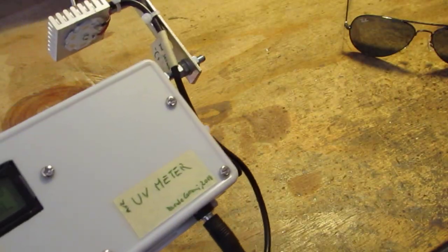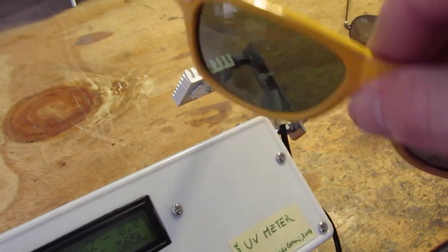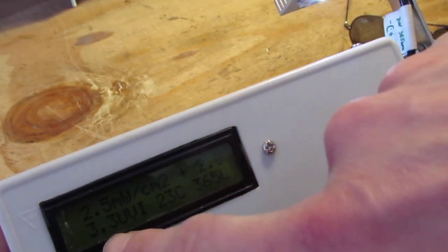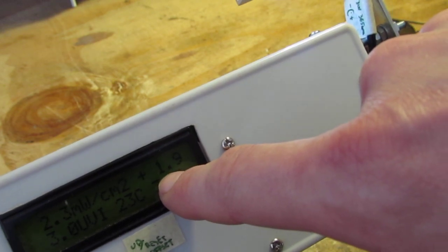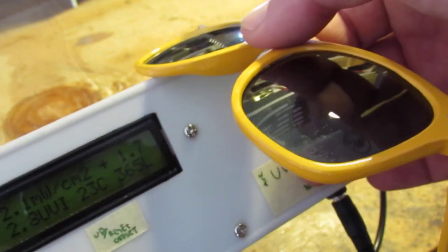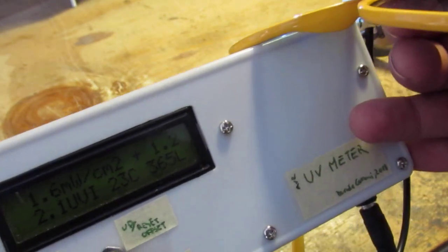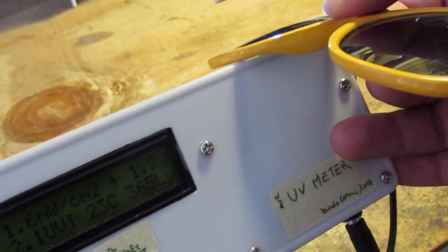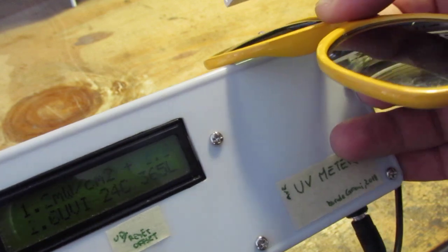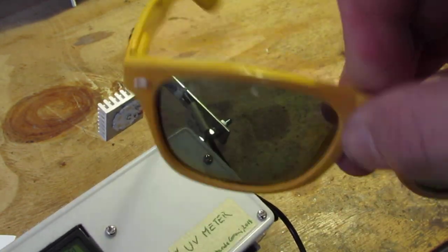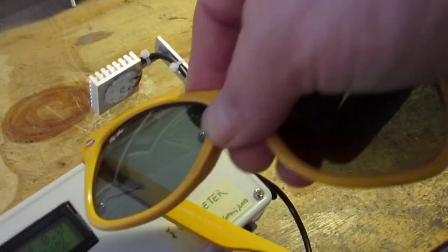But if we check these fake glasses here, let's do the same thing. You see the UV offset is almost 2, and 2.2 is the light intensity. Look at the offset - even if I put the lens here, the light intensity remains high. This means this lens is not UV protected, and it's pretty dangerous for your eyes.